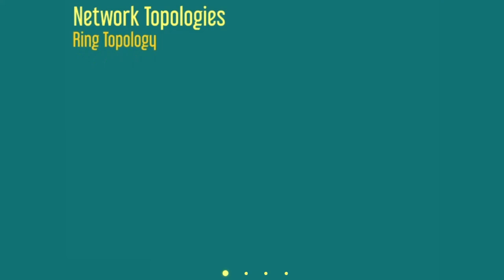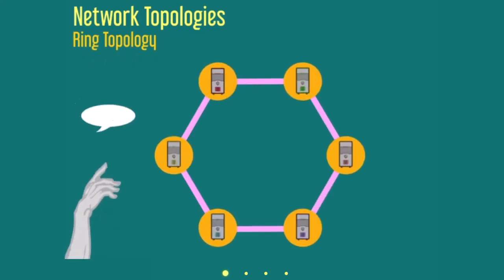Ring topology. In a ring topology, one continuous loop connects all of the nodes. Data passes from one node to the next, usually flowing in one direction.